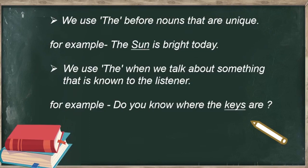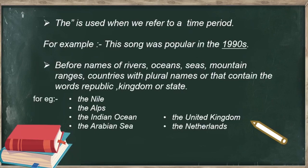We use 'the' when we talk about something that is known to the listener — that means the person we are talking to is familiar with that thing. For example, 'Do you know where the keys are?' We use 'the' before keys because the person we are talking to knows about the keys. The is also used when we refer to a time period. For example, 'This song was popular in the 1990s' — 1990s shows a time period, so we used 'the' before it.